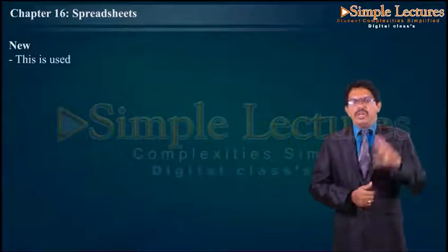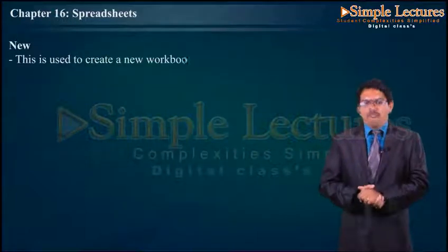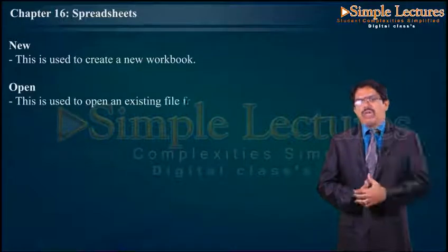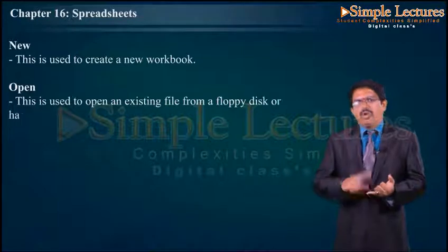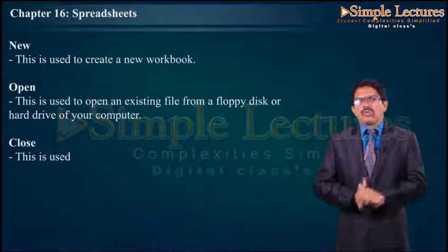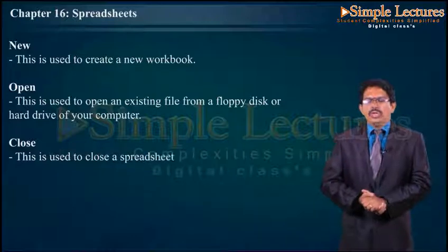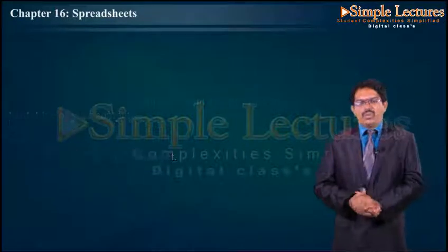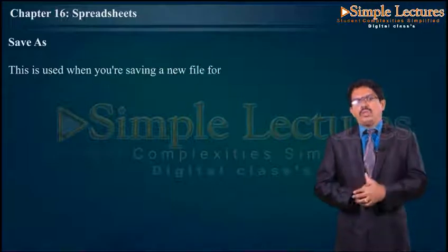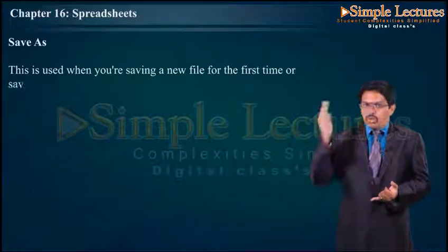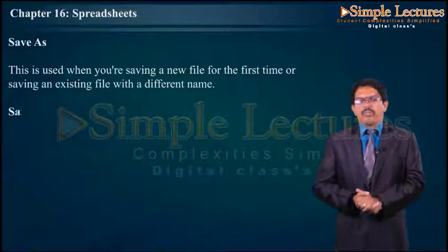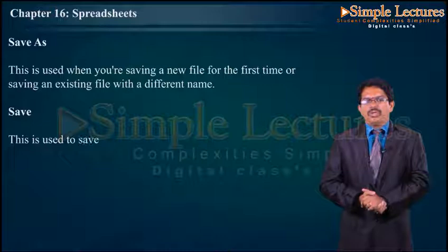New: This is used to create a new workbook. Open: This is used to open an existing file from a floppy disk or hard drive of a computer. Close: This is used to close a spreadsheet. Save As: This is used when you are saving a new file for the first time or saving an existing file with a different name.